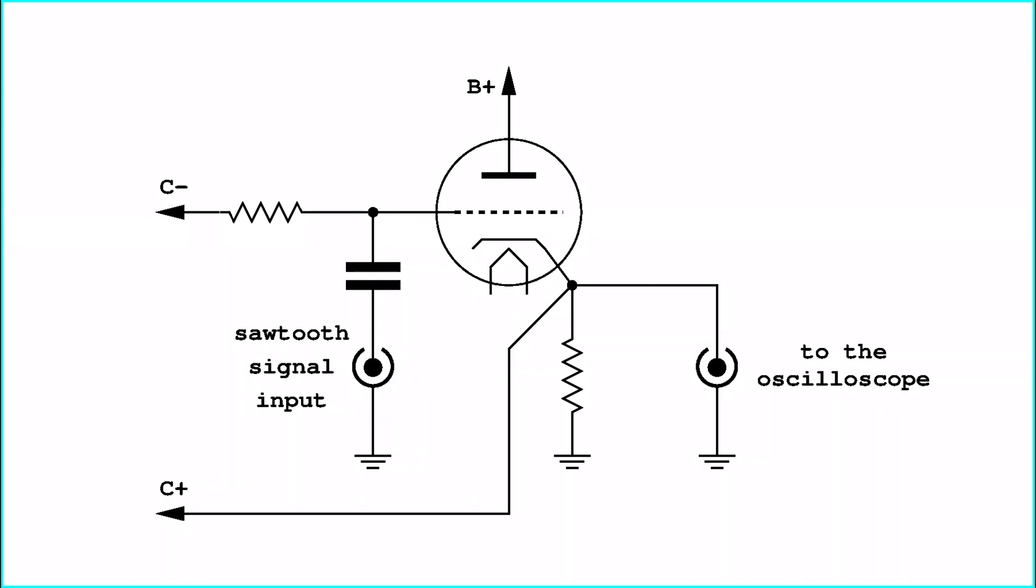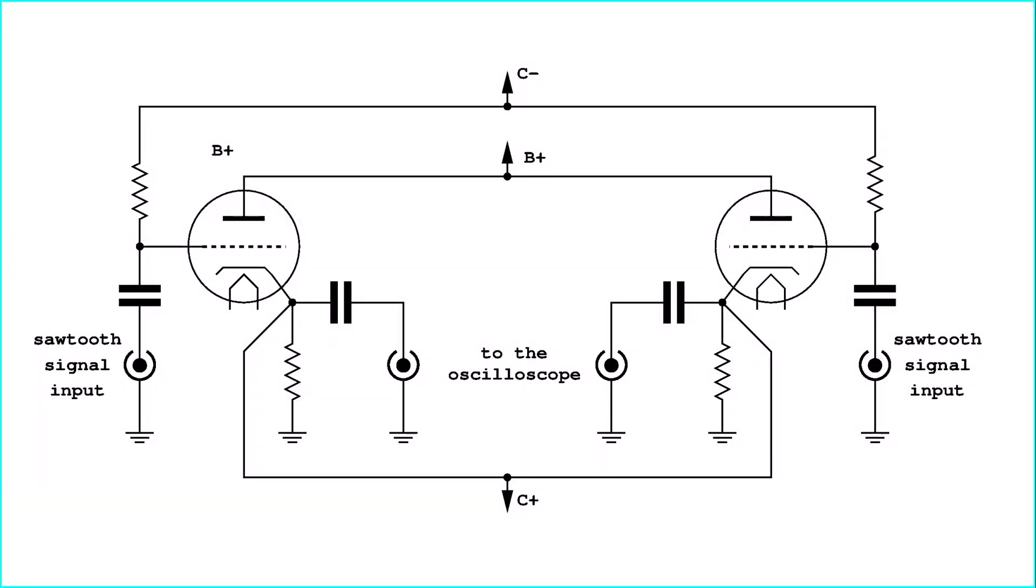As it is relatively easy to build this type of curve tracer for a single tube, if a dual-trace oscilloscope is available, duplicating the circuit to match tubes would be the obvious next step. What is necessary is to make sure that the applied sawtooth signal is the same for both tubes.